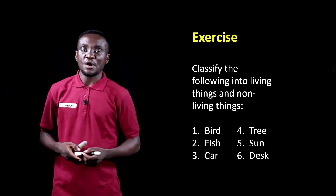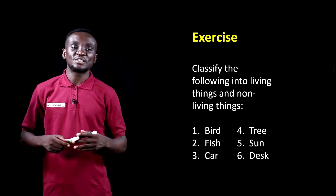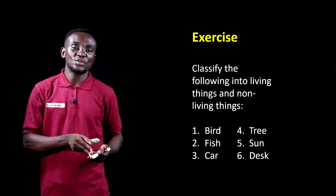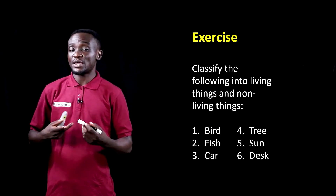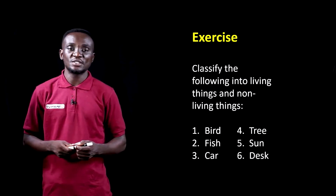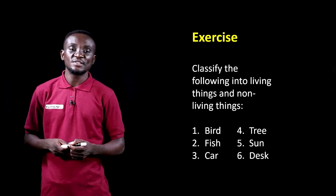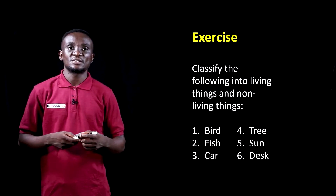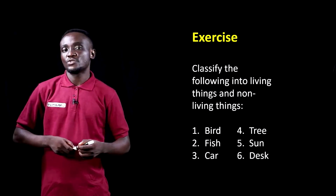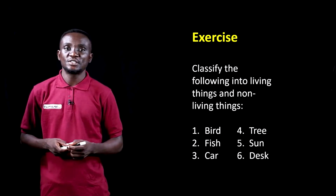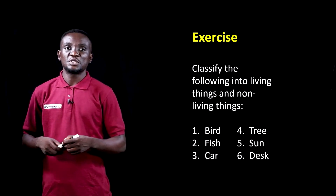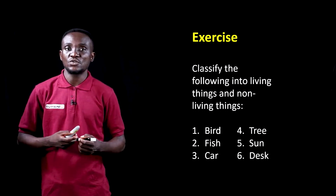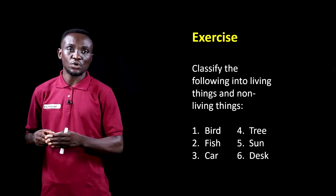When you look around, you see a large number of items — some living, others non-living. Some of the items you are likely to see are other human beings, which is an example of living things, birds, insects, and the likes. You're also likely to find trees, and tables and chairs, which are examples of non-living things.